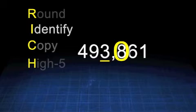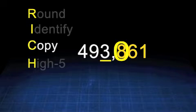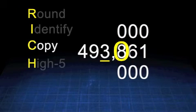The next step is to copy the original number, but just a little differently and twice. Every number to the right of the underlined number turns into a zero. Every number on the left stays the same.